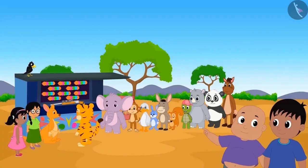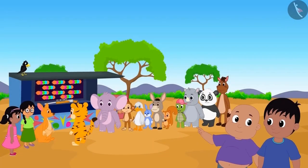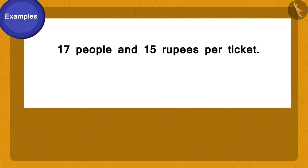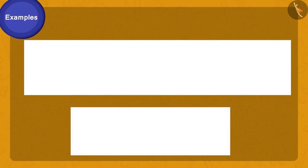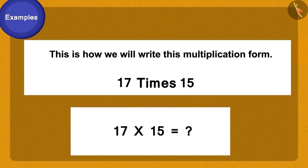Bablu asked Raju: why not buy themselves and their friends tickets to this game? Bablu and Raju counted the number of people — including both of them, there are 17 people. The cost of one ticket for the balloon-busting game is 15 rupees. Raju and Bablu are unable to calculate how much money they will have to pay to buy the required number of tickets. Come children, let us help Bablu and Raju once again. Let us learn to perform this multiplication using a different process.